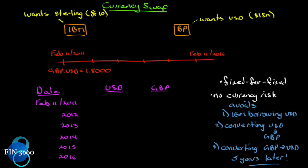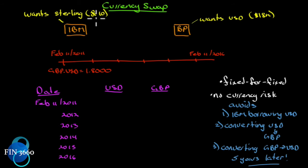We're done with our interest rate swap. Let's have a look at the other big swap in this chapter — the currency swap. Our scenario is February 11th, 2011. We have two companies: IBM in the US and British Petroleum in the UK. IBM wants access to sterling — 10 million pounds. BP, on the other hand, wants access to US dollars — 18 million.